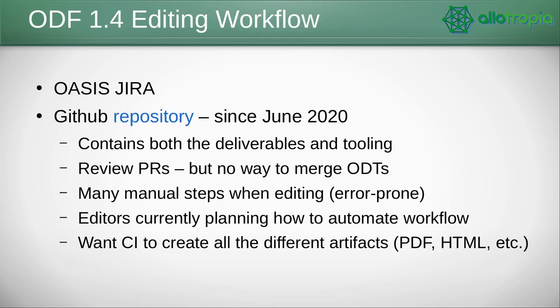This brings us to the editing workflow for the next version of ODF. We have all of these proposals in the OASIS JIRA — so how are we going to get them into the specification documents? Since about a year ago we have a GitHub repository that contains all of the deliverables of the specification: the ODT documents, various generated files like PDFs, and the tooling that processes these deliverables and converts them.